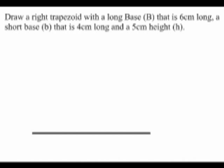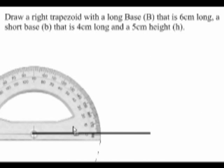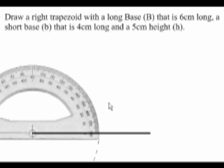The next thing to do is to draw a 90 degree angle at one end of this base. So using a protractor, I draw a line that is at a 90 degree angle to the base that I drew.